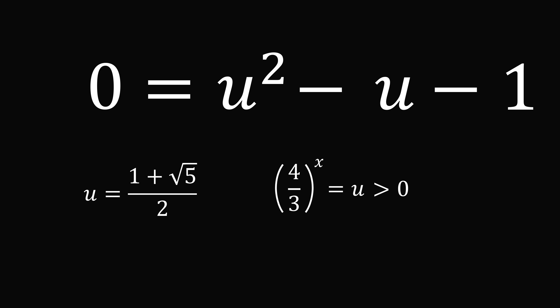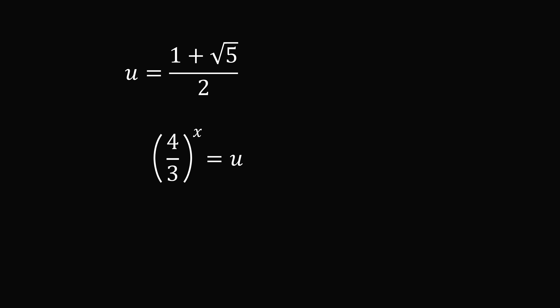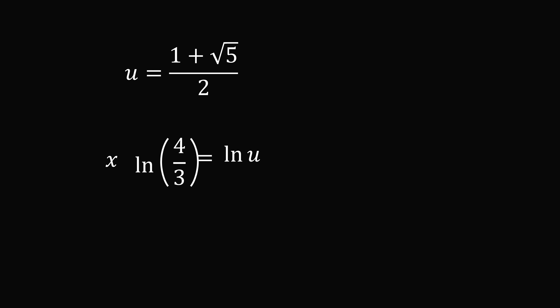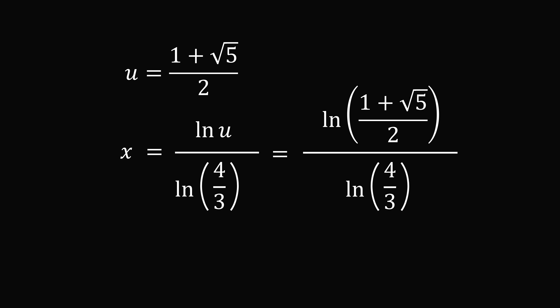This is the golden ratio, but we still need to solve for x. We take the natural log of both sides of the equation. Since x is a real number, we bring the exponent down to the front, giving x multiplied by the natural log of 4 over 3 equals the natural log of u. Dividing both sides by the natural log of 4 over 3, and substituting the value of u, we get x equals the natural log of the golden ratio — which is 1 plus root 5 all over 2 — divided by the natural log of 4 over 3.